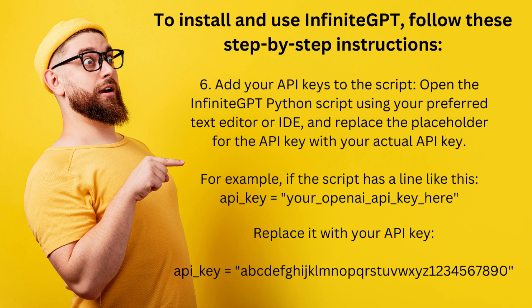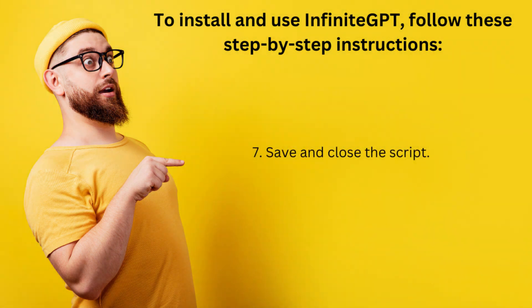For example, if the script has a line like: api_key = 'your_openai_api_key_here', replace it with your actual API key, such as: api_key = 'ABCDefGhiJklMnopQrStuvwxyz1234567890'. Then save and close the script.